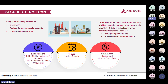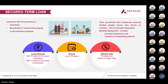Next is secured term loan. Under SBB we give term loans for purchase of machinery, commercial or residential property, medical equipment, industrial equipment, or general business expansion. Loan amount: from 10 lakhs to 5 crores for audited financials, and 10 lakhs to 60 lakhs for unaudited financials. Tenure is up to 15 years, interest rate is floating and linked to repo rate. On a case-to-case basis we go up to 10 crores as well.